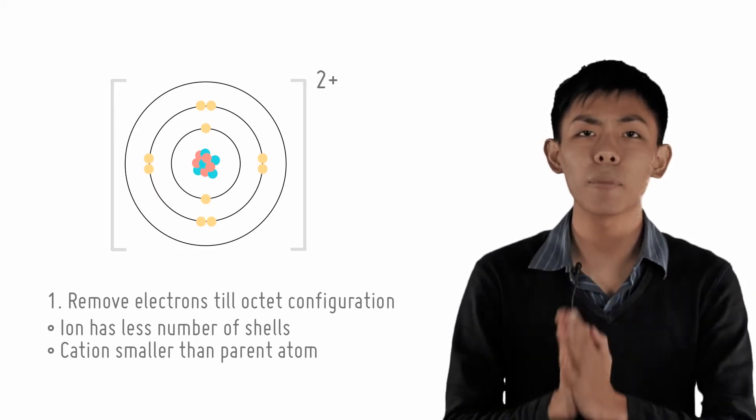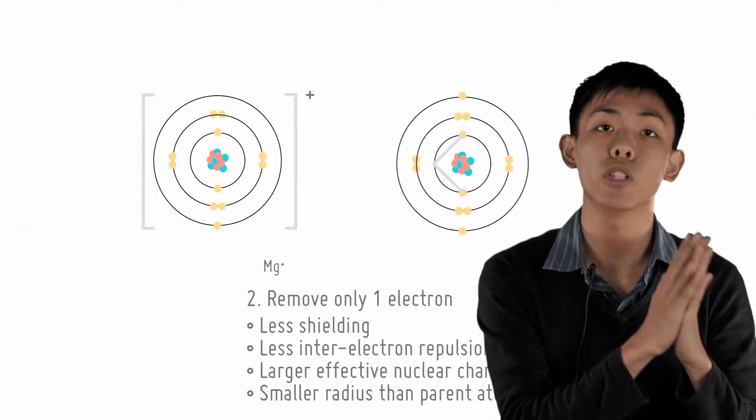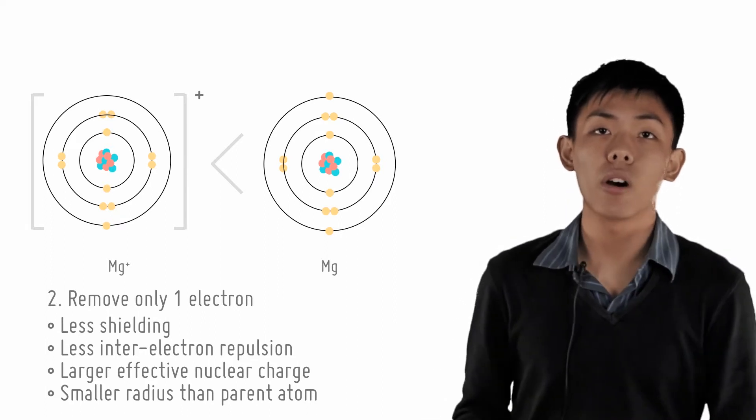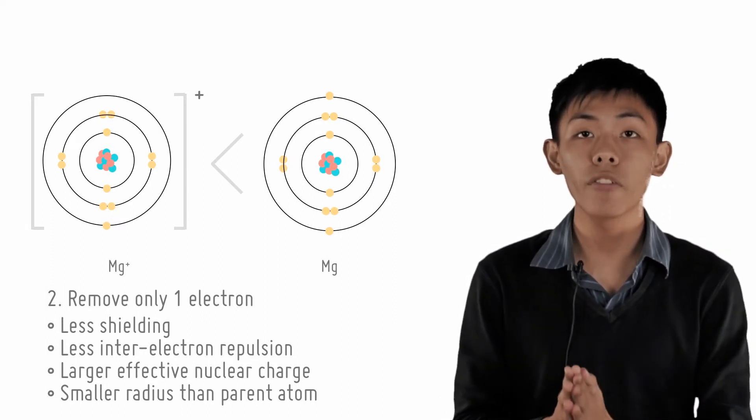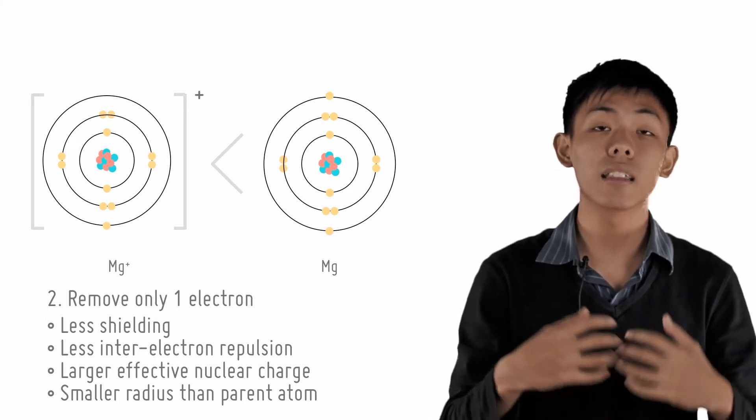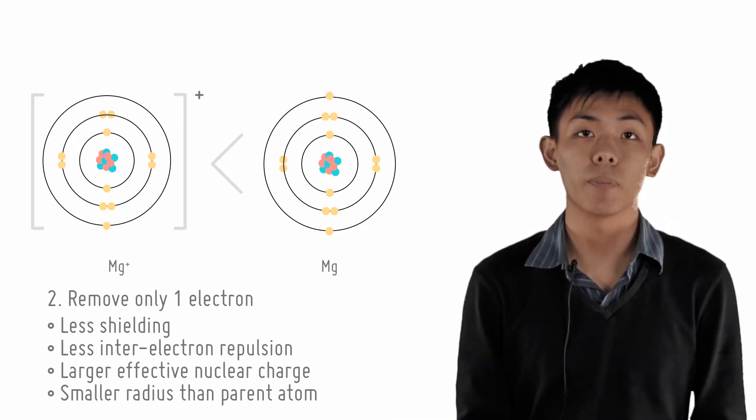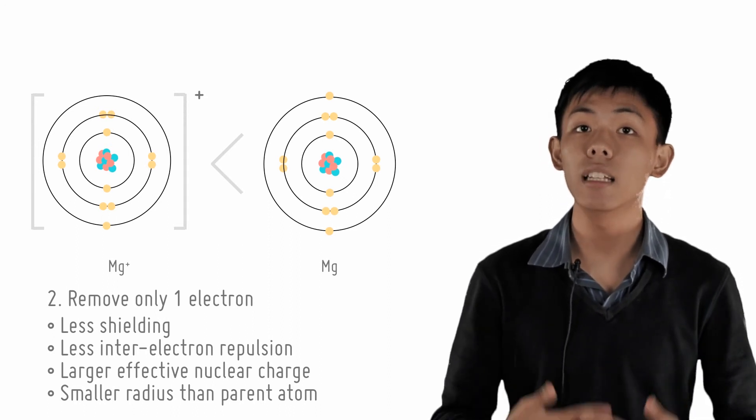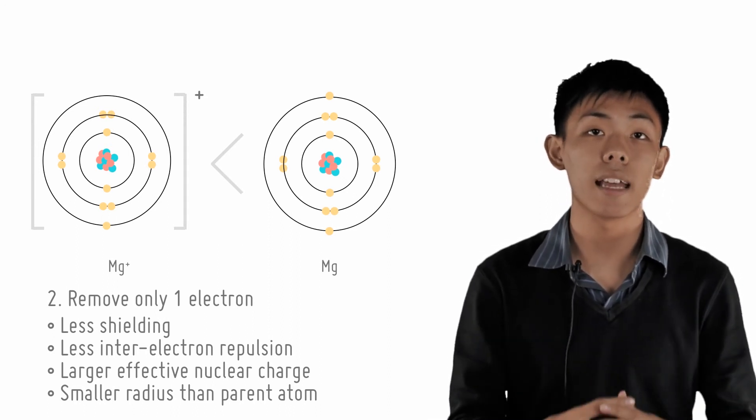But what if we attempt to compare, say, Mg+ (the monovalent ion) with Mg? The Mg+ outermost shell still has one electron. However, in this case, the one less electron means less shielding and less inter-electron repulsion in the shell, regardless of how small it may be. The effective nuclear charge is slightly larger, resulting in a smaller sized cation.